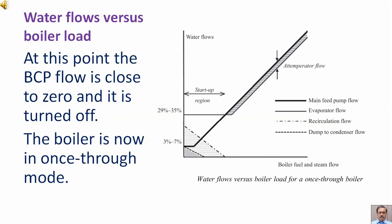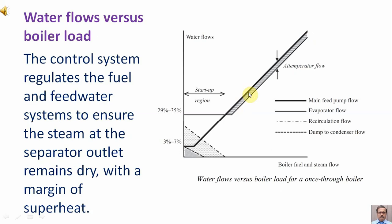At this point, BCP flow is close to zero and it is turned off. The boiler is now in once-through mode. The control system regulates the fuel and feed water systems to ensure the steam at the separator outlet remains dry with a margin of superheat.